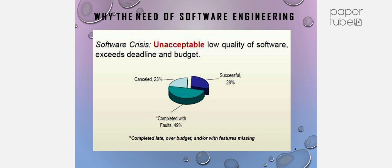Why do we need software engineering? We need software engineering to complete projects on time and within budget. A software crisis refers to unacceptable low quality of software that exceeds deadlines and budget.